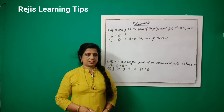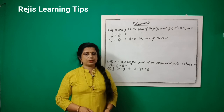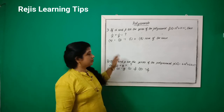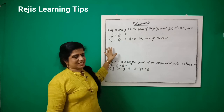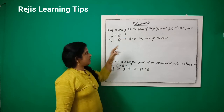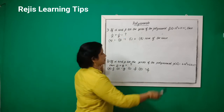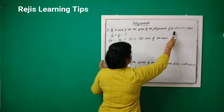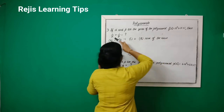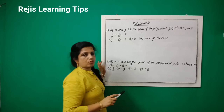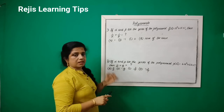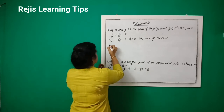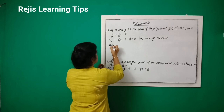Hi students, welcome back. Today we are going to discuss some objective type questions from polynomials. First question: if alpha and beta are the zeros of the polynomial f(x) = x² + x + 1, then 1/α + 1/β is equal to? We are going to do objective type.